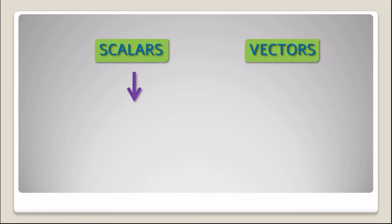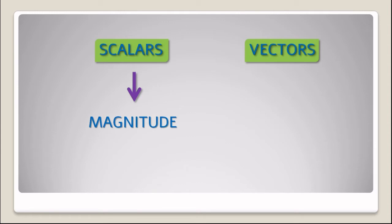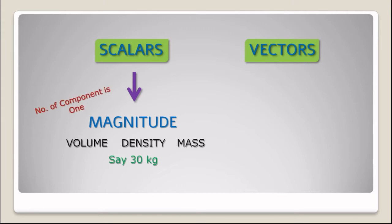Scalars are a physical quantity completely described by magnitude only. For example, volume, density, mass, etc. Let us consider mass, say 30 kg. Here the number of components is 1, as we need only magnitude. So to define scalars we need zero basis vectors.